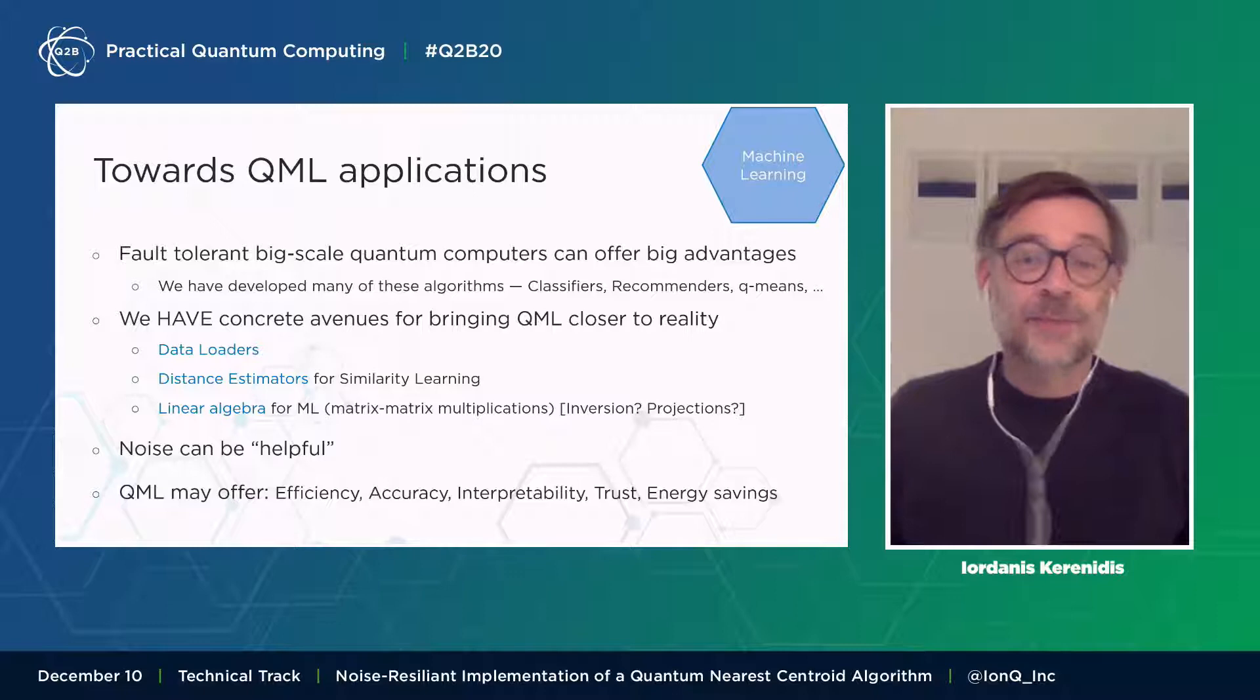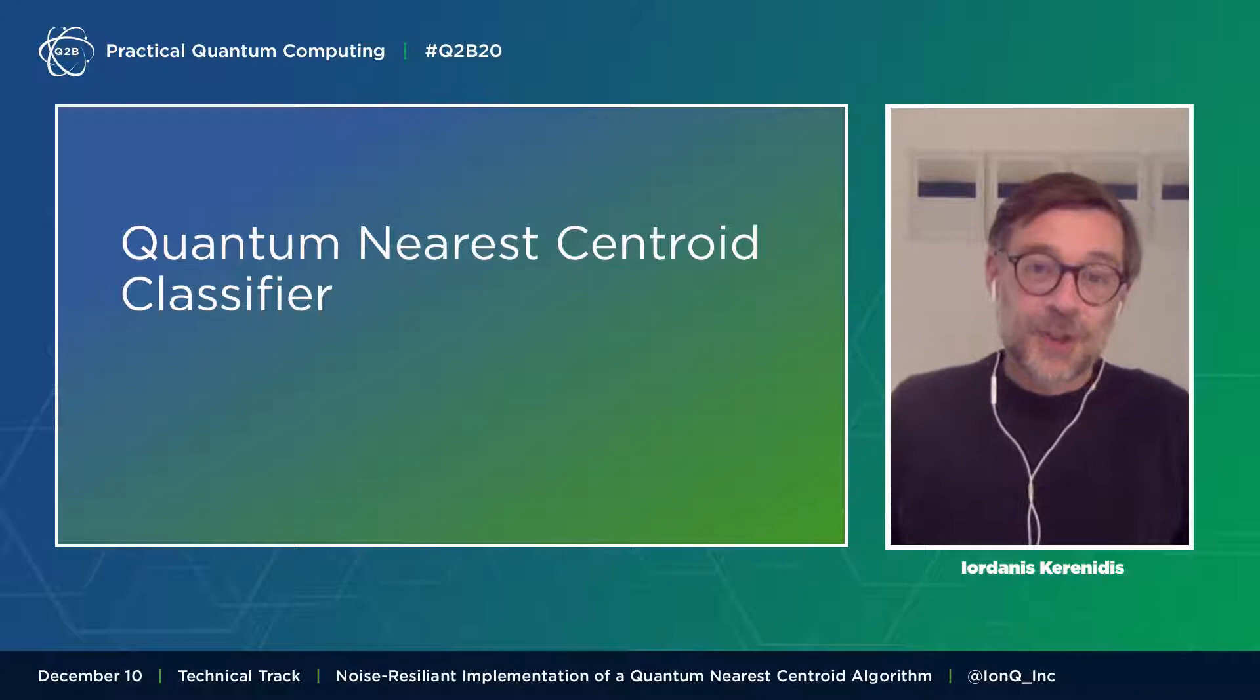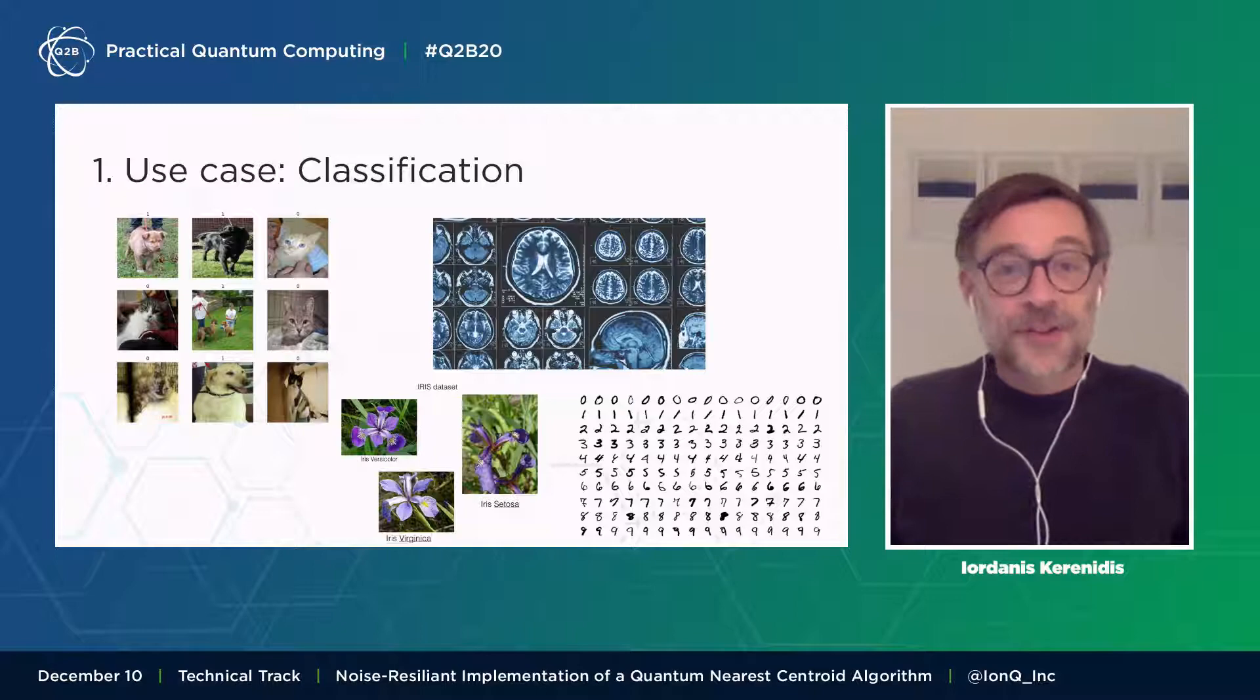This last reason I would like to discuss is that usually in machine learning we talk about efficiency and accuracy, but there are also some other properties that become more and more important. Things like interpretability, trust, energy savings, and these are things that quantum technologies can also help with. So let's look at our specific application, the quantum nearest centroid classifier.